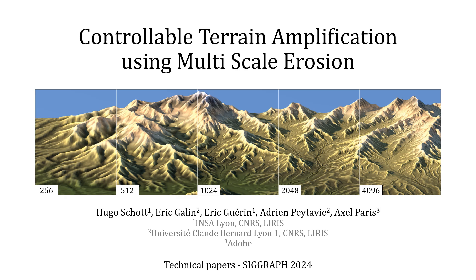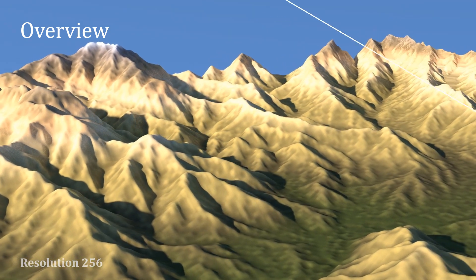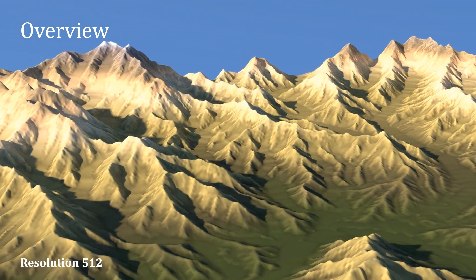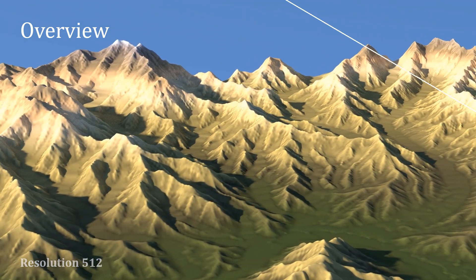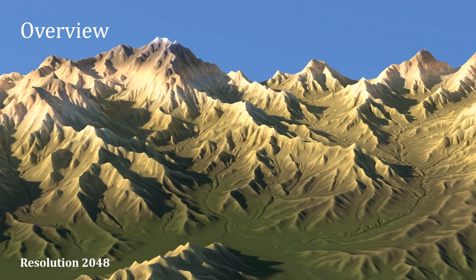We present a new multi-scale amplification model to automatically generate a hydrologically consistent, high-resolution terrain augmented with landform features at different scales. Our method amplifies low-resolution input terrains with realistic landform details using erosion simulations at different scales.